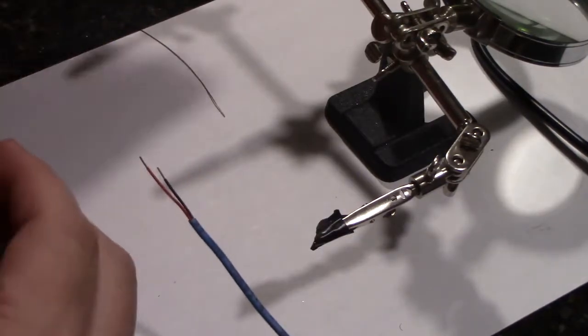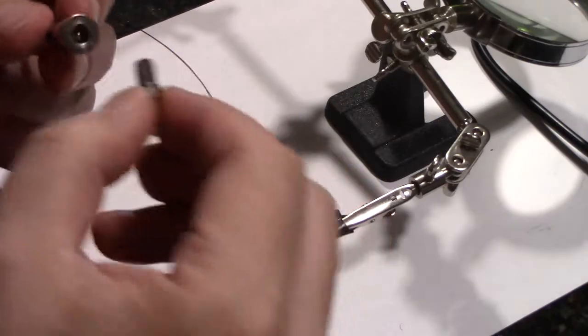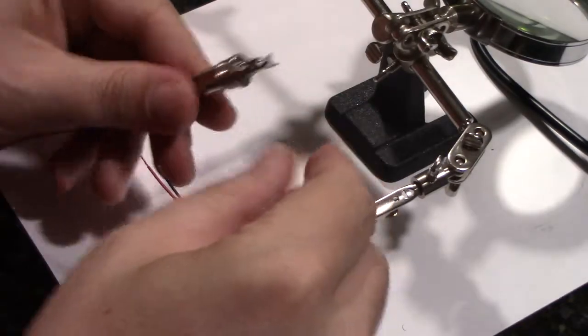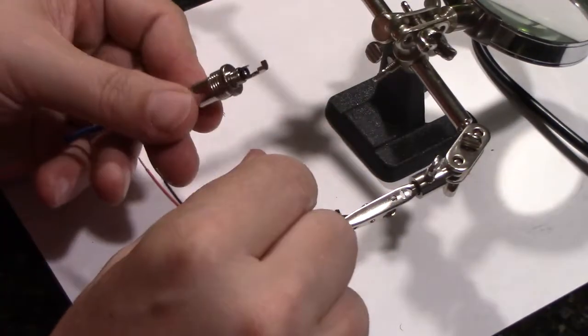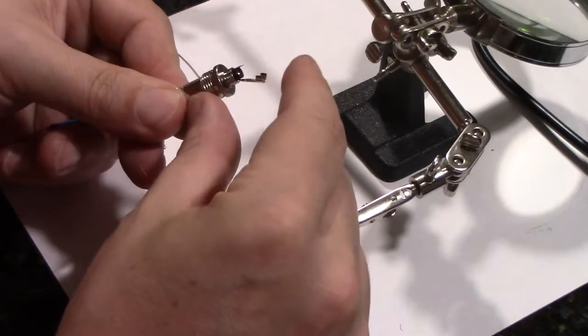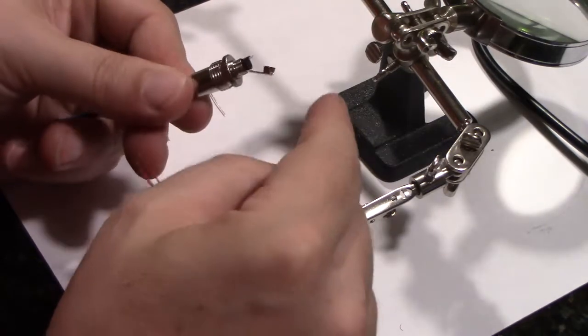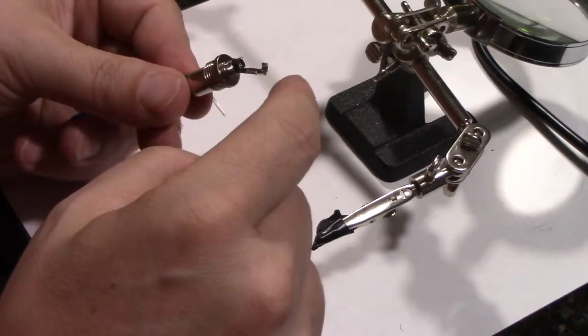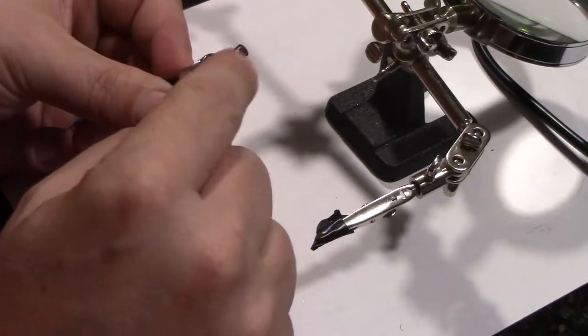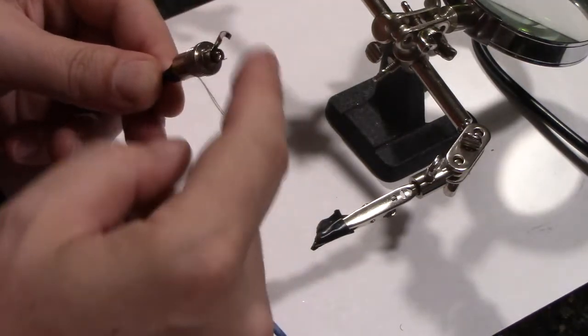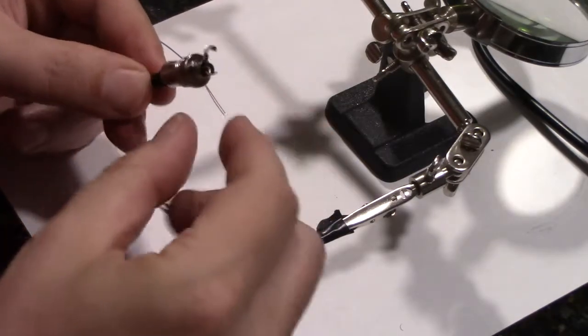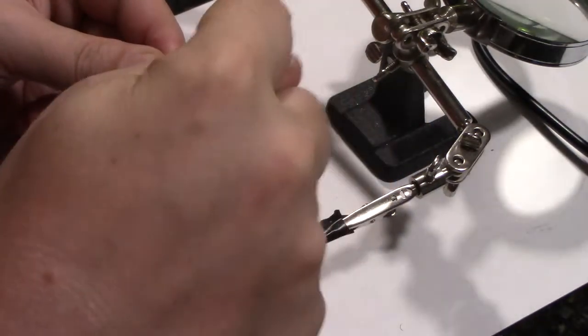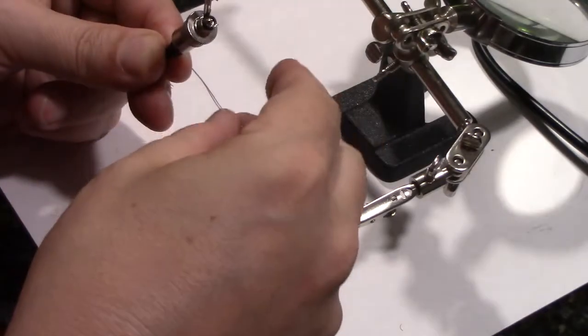As I did before, I'm going to put the male connector into a female connector before I put it into my helping hands. That just helps keep it steady. I'm going to gently bend the outer tab back so that it's out of the way when I work on the inner tab, and I'm going to turn it so it's facing to the top right to create a little cup into which I'm going to put the solder.